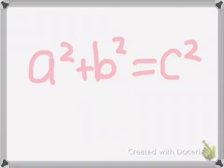The first step is to write down the formula. The formula for the Pythagorean theorem is a squared plus b squared equals c squared.